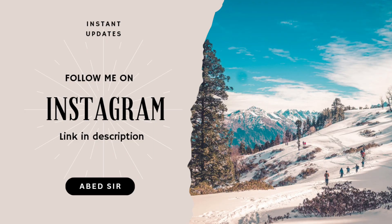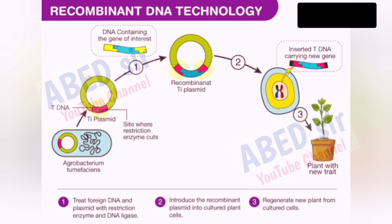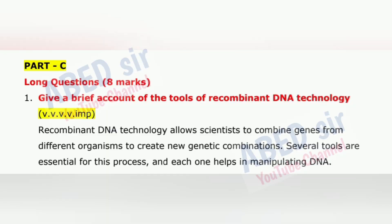First important question is 1: Give a brief account of the tools of recombinant DNA technology. Recombinant DNA technology allows scientists to combine genes from different organisms to create new genetic combinations. Several tools are essential for this process, and each one helps in manipulating DNA.